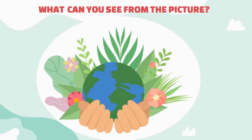To begin today's lesson, I'm going to show you a picture. Now you will see a picture on your screen. What can you see from the picture? We can see our planet Earth. We can also see hands holding the Earth, which conveys that we are protecting our planet. What do you think the leaves, plants and flowers represent in this picture? Leaves and plants represent nature and its resources. So, it's our duty to protect our Earth, our home planet.